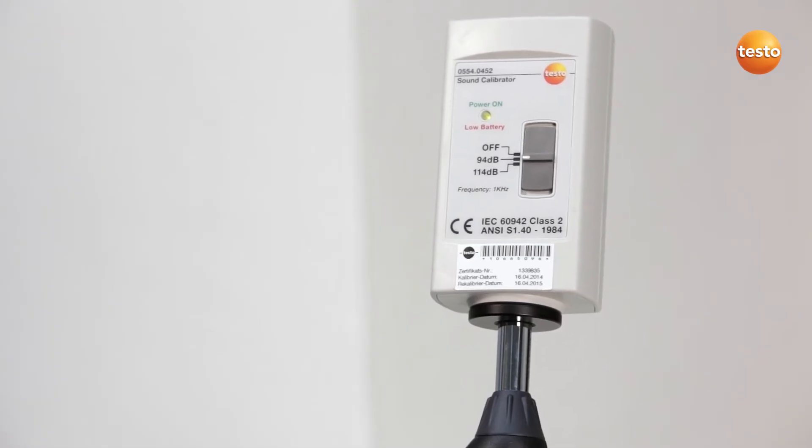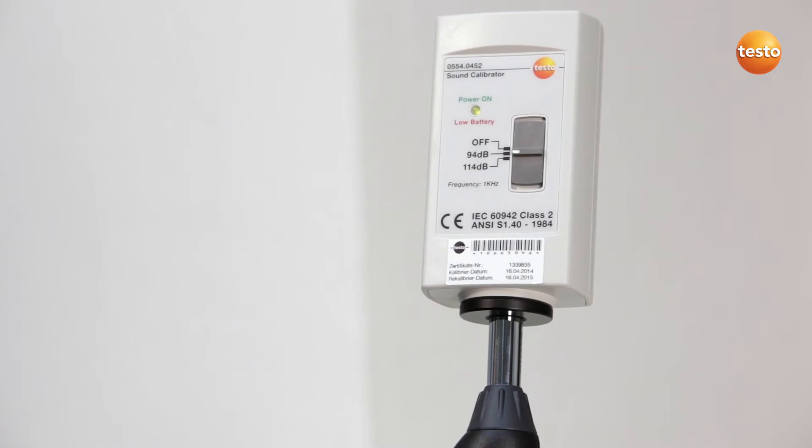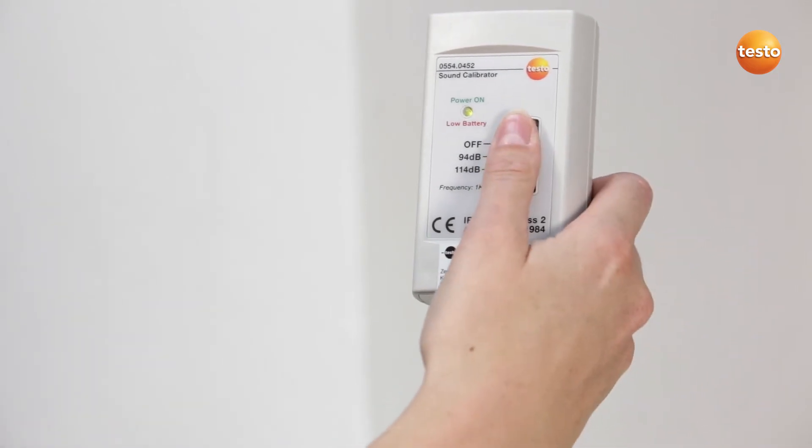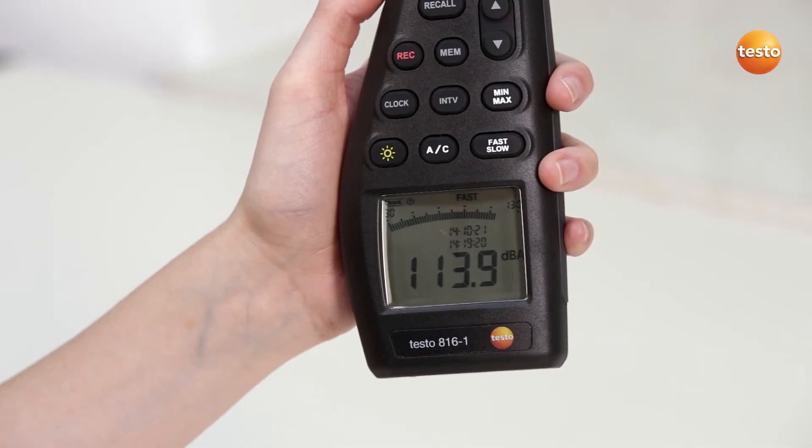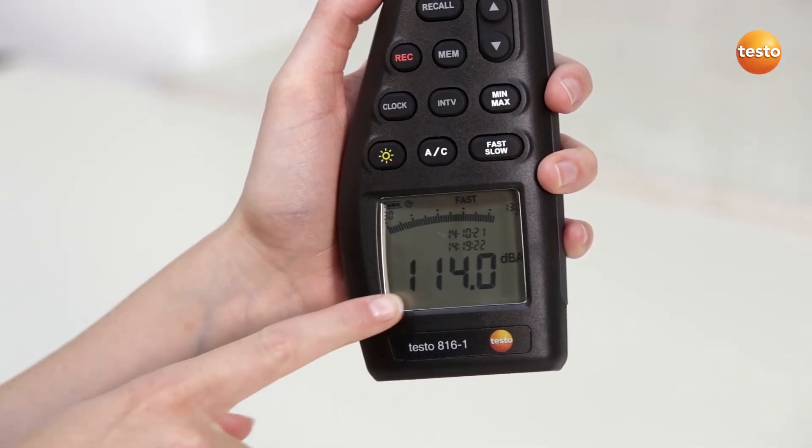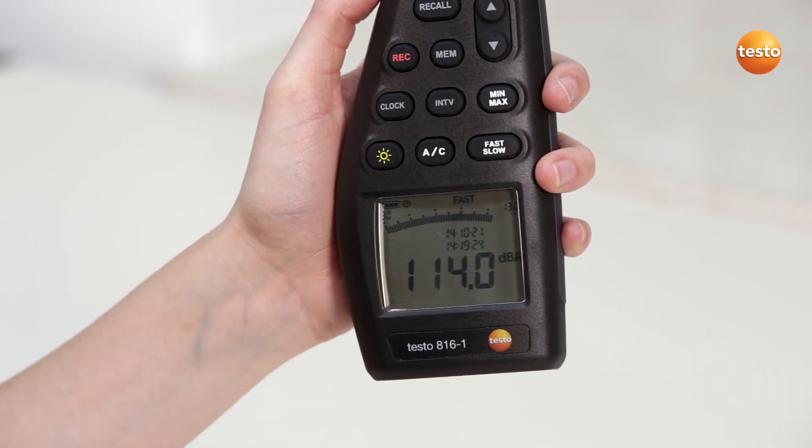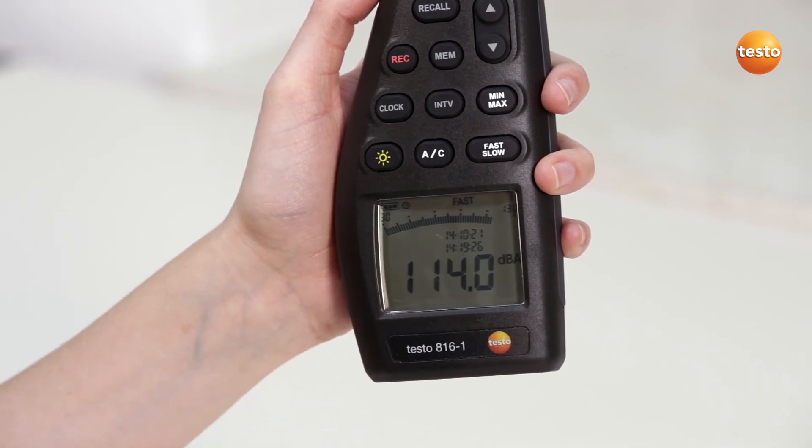In order to check the accuracy one more time, set the regulator on the calibrator to the lower position. This gives the measuring instrument 114 dB. The reading in the instrument display must now be 114 dB. A deviation of ±0.2 is acceptable.